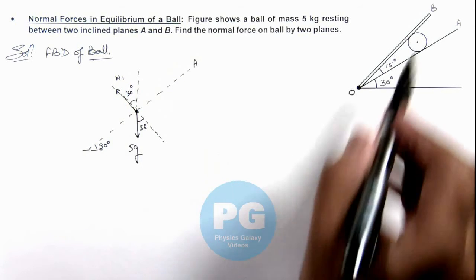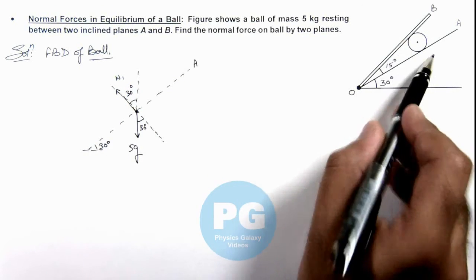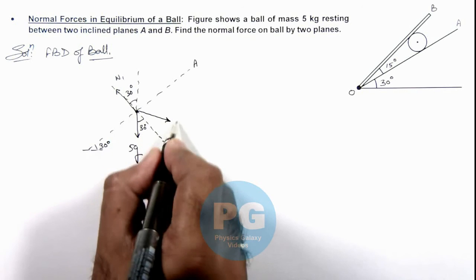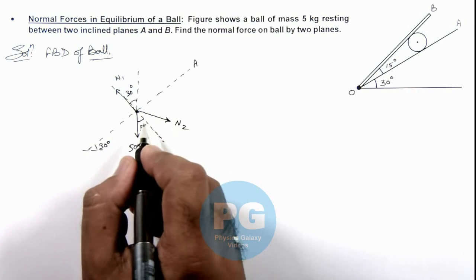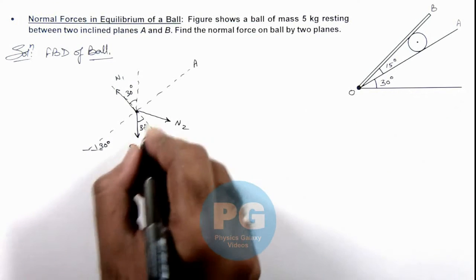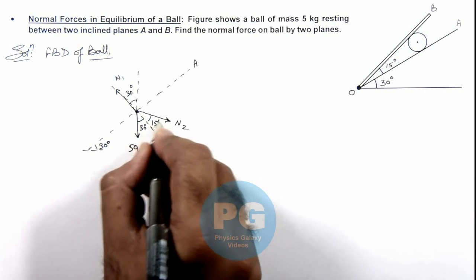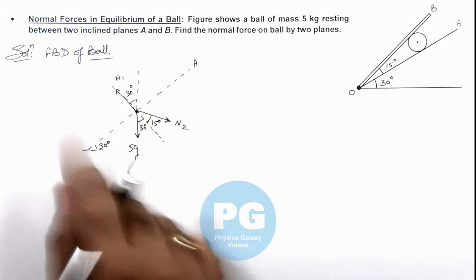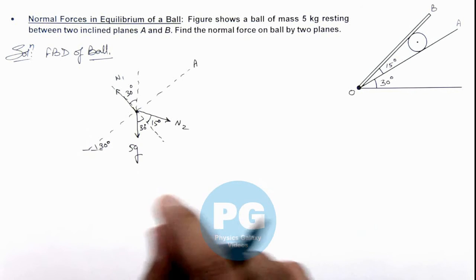Another normal reaction is acting on it due to this plane, which is in this direction. Say this is N₂, which is at an angle 45 degrees with the vertical because this angle is 45. So these are the only forces acting on the ball, and the ball is in equilibrium.